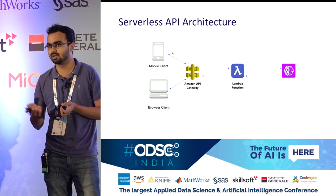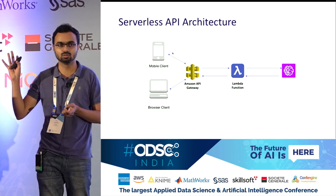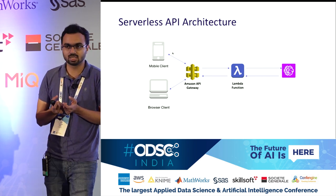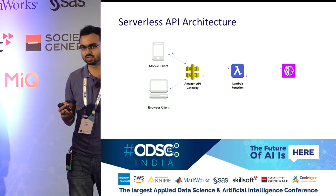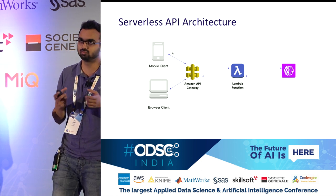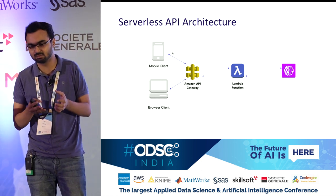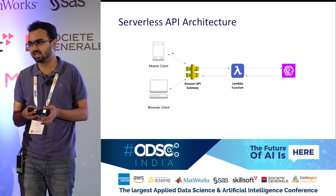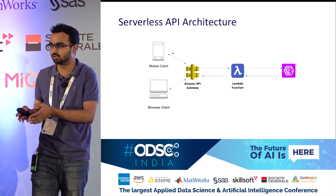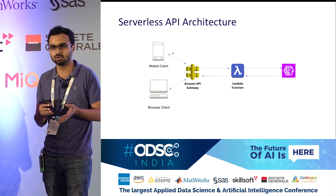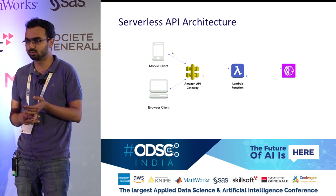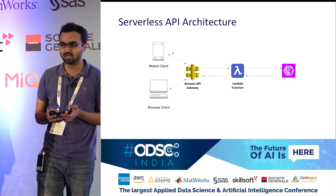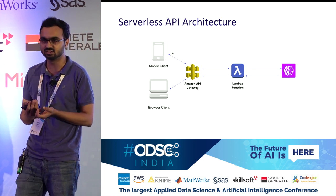Just a quick check — how many of you have heard or used SageMaker before on AWS? SageMaker is basically a platform for end-to-end machine learning. It's not just one service — it has multiple components that help with different stages of machine learning. We have a service called Ground Truth for data annotation. For training and for deployment of trained models, we provide managed compute. All of this is available under a single umbrella, which is the SageMaker platform.